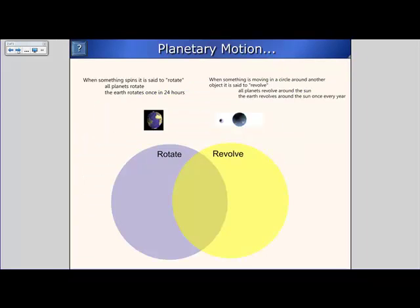If I move on to the next page about planetary motion and the words that describe how our planets move throughout the solar system, the first one here is when something spins, it is said to rotate. All planets rotate, and the Earth rotates once in 24 hours. I was lucky enough to find an image that shows the Earth rotating.